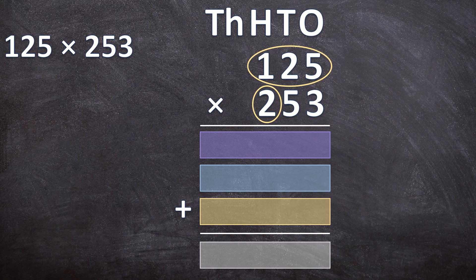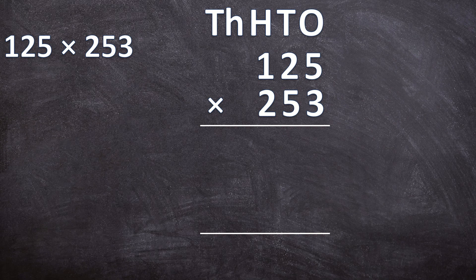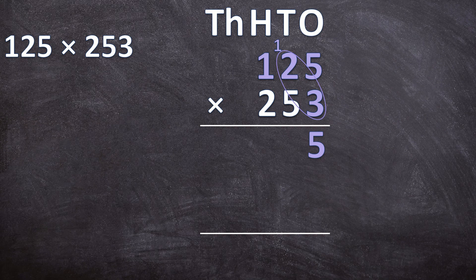We first get the answer for 3 times 125. Starting at the ones: 5 times 3 is 15, so write down 5 and carry the 1. Next, 2 times 3 is 6, plus the carried 1 is 7. Then 1 times 3 is 3. So the answer for 3 times 125 is 375.